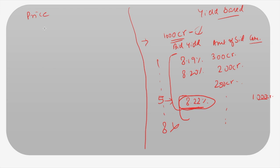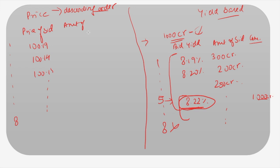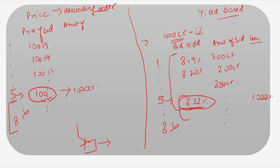In a price-based auction, suppose there are eight bidders bidding prices in descending order: 100.19%, 100.14%, 100.13%, and so on. The cumulative bid amount is calculated, and again at the fifth bidder ₹1,000 crore is matched — bidders beyond are rejected. Since the government has to offer a yield on its securities, a higher price bid is beneficial. A cutoff price of 100 means bidders willing to pay more than 100 are accepted.